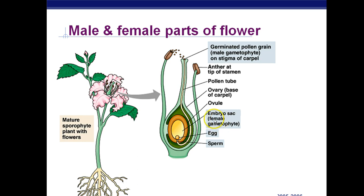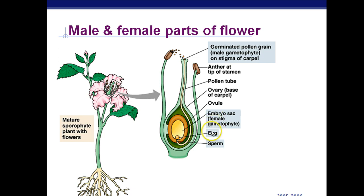The embryo sac within the ovule is inside the ovary — don't get those confused. Ovary, ovule inside. The ovule has the eggs. The egg is also going to be haploid, produced by the female gametophyte. Haploid to haploid — remember that's mitosis for producing egg and sperm.